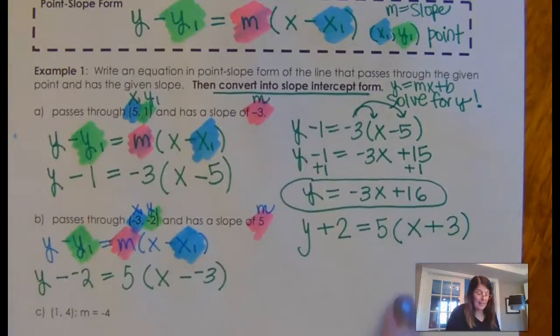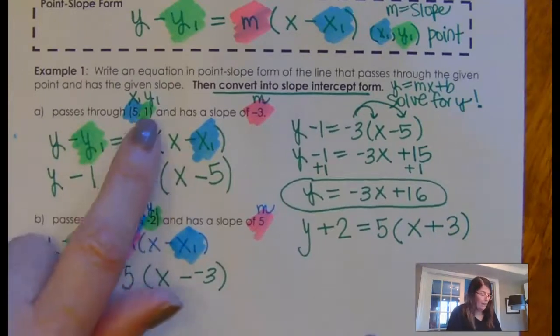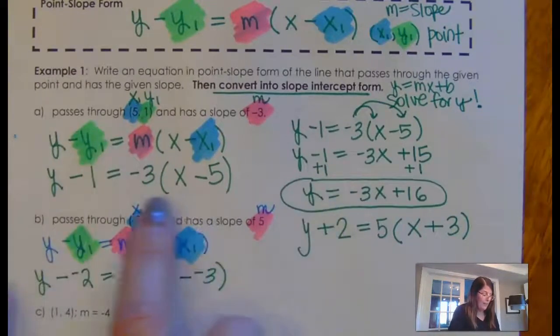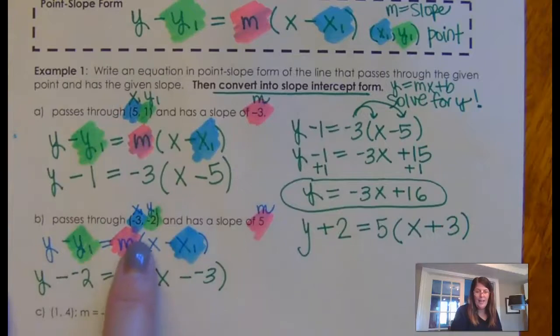Now, I just would like to take a second to point out, whenever you have a negative for your X1 or your Y1, it's going to become plus because it's always the opposite sign. Here, they were positives and I wrote it in the equation minus 1 and minus 5. Here, they're negative and I write it in the equation plus and plus. So it's just the opposite sign.